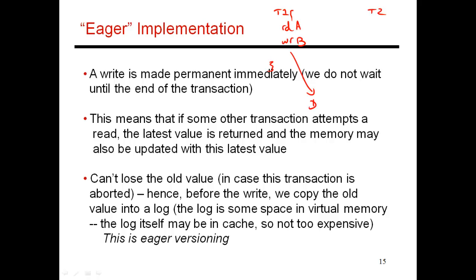Let's assume that I contact my directory and say I'm going to do a write to B, so I need the block with exclusive permissions. The directory says that B is in modified state with core one, which is running transaction one. So you have the block in modified state over here.